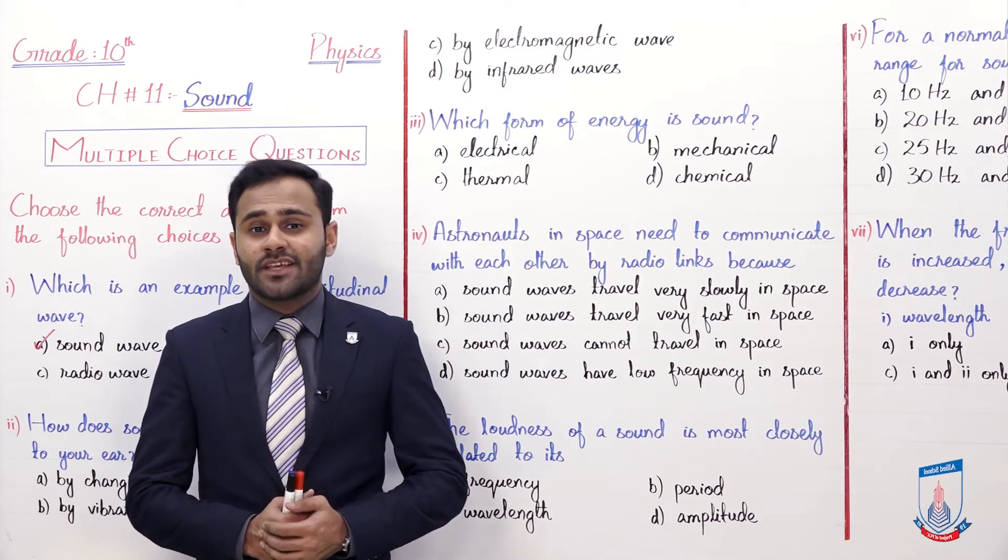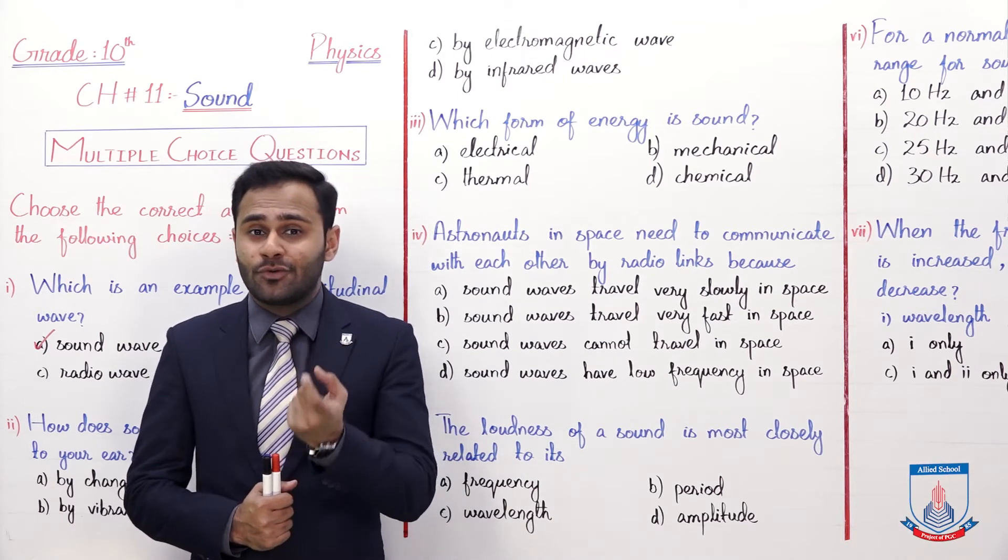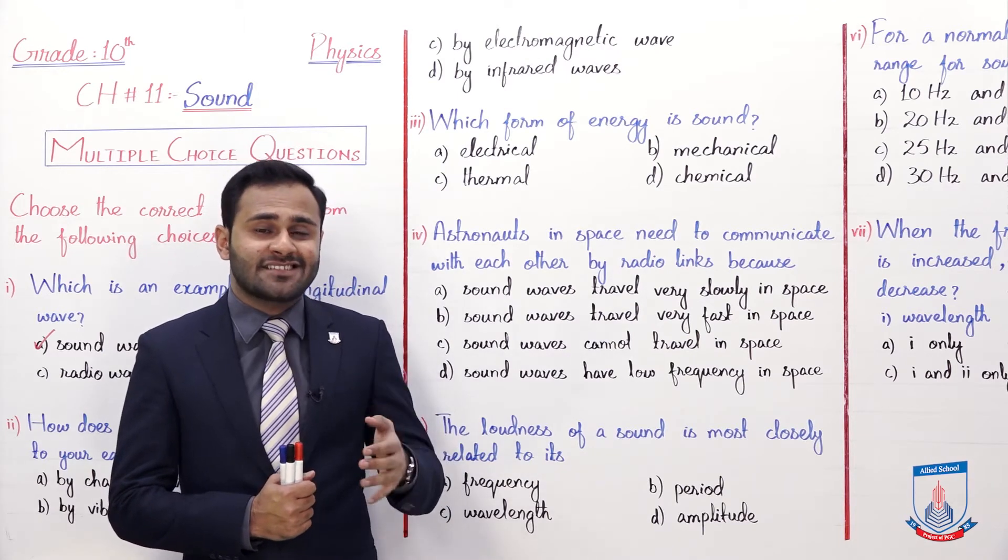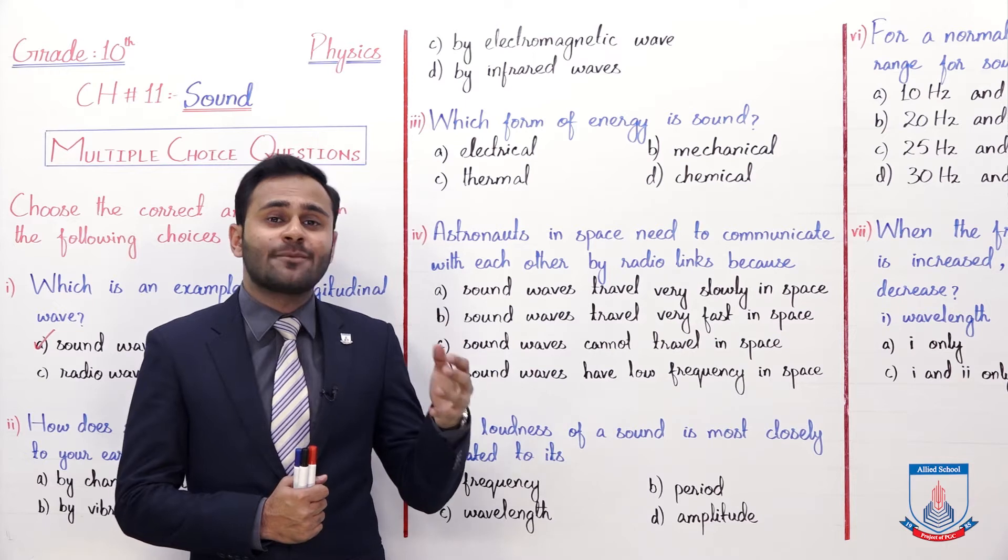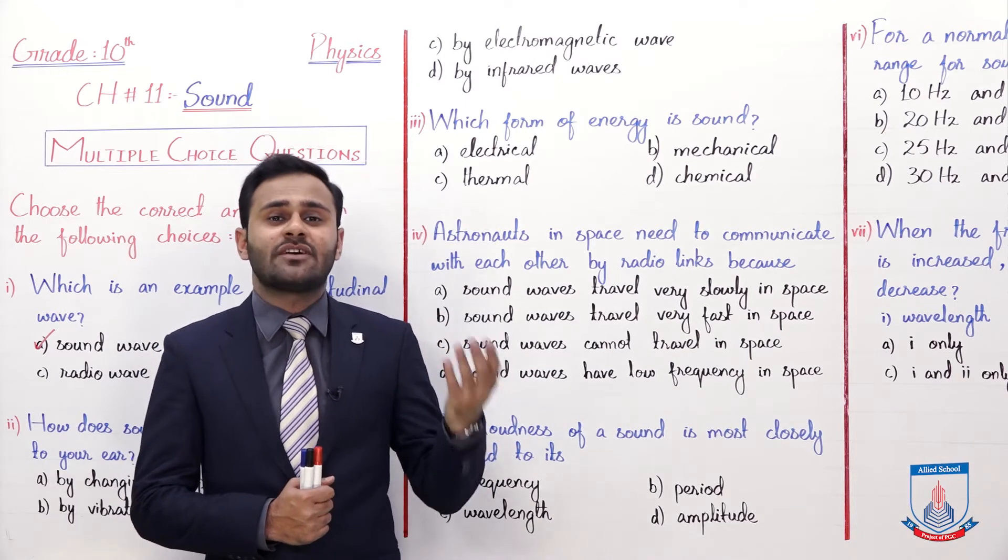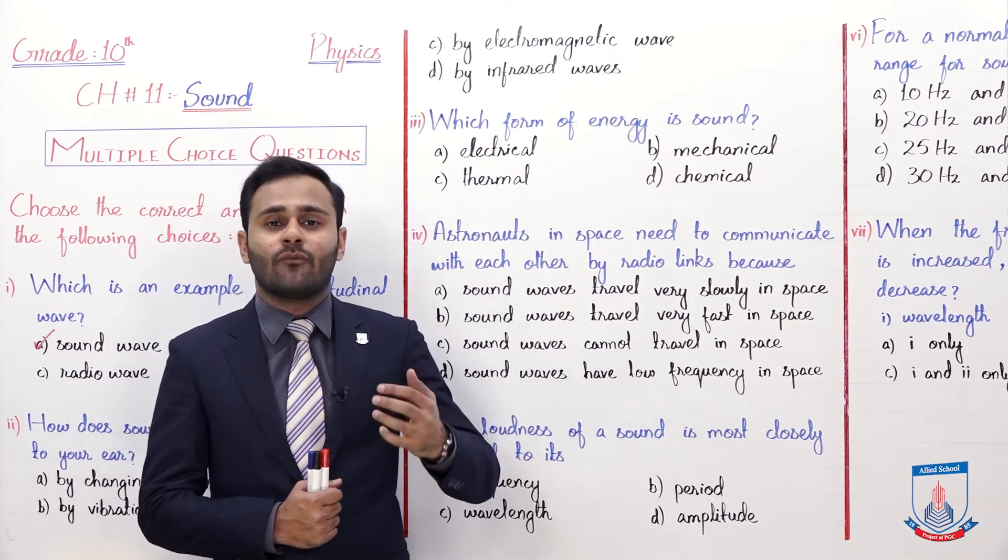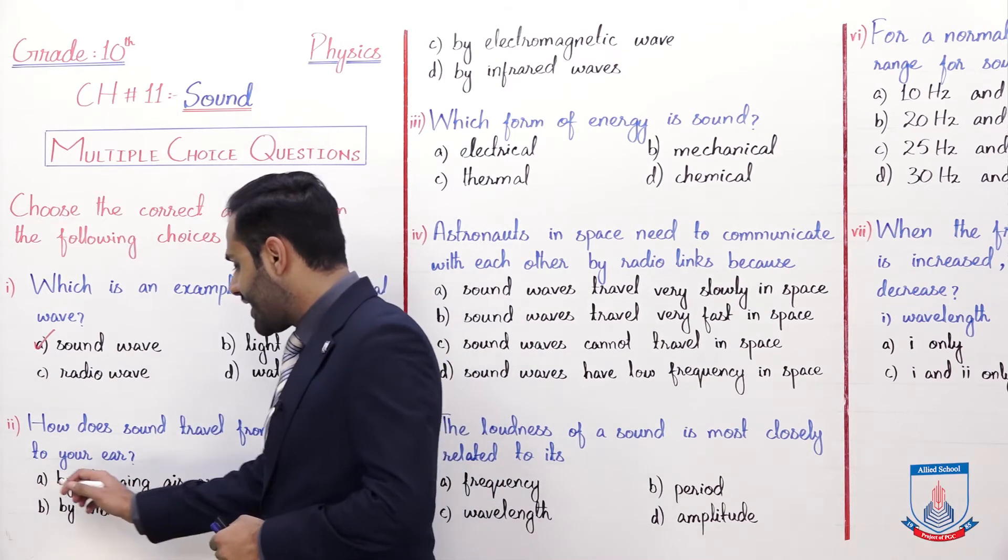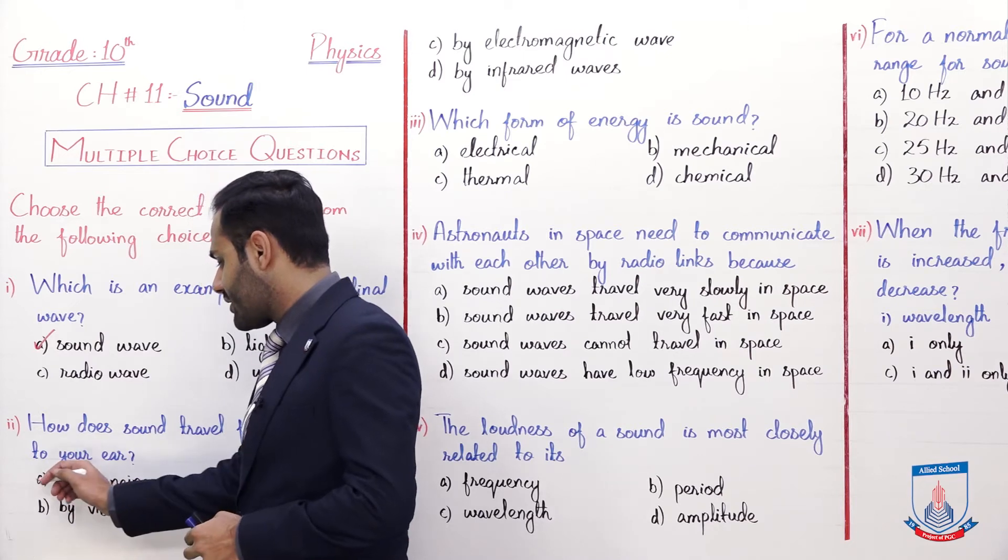So sound basically travels from source to our ear by the changing of air pressure. Because as we studied before, sound is produced due to the vibration of atoms. So when sound is being produced, then in air the particles through their vibration help sound travel from one place to another place. So the option A is correct which is by changing air pressure. Clear?